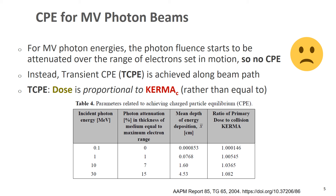For 100 keV there is essentially no photon attenuation, but for a 1 MeV beam about 1% of photons will be attenuated over the range of the created electrons. For 30 MeV that increases to 15%. The far right column shows the ratio of collision dose to collision kerma — because electrons don't travel in a straight line in the medium, you end up with about an 8% difference between dose and collision kerma for a 30 MeV photon.